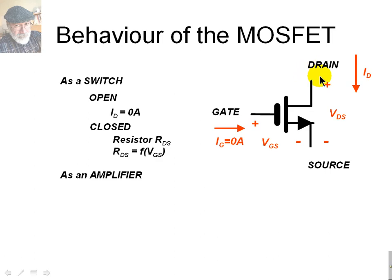In reality, a variable resistor, a controllable resistor, a resistor whose value depends on the voltage of the gate to the source. As an amplifier, the drain current is a function of the voltage of the gate to the source. It's a voltage-controlled current source.